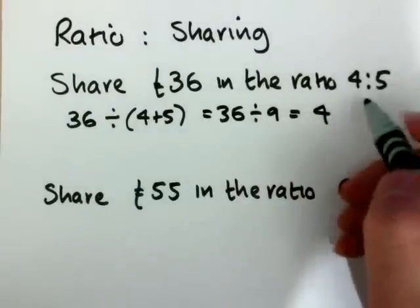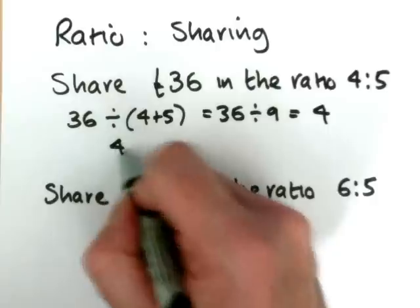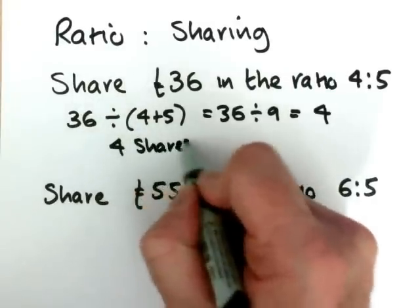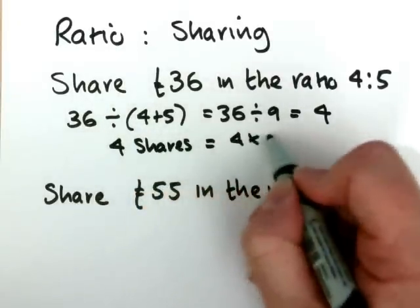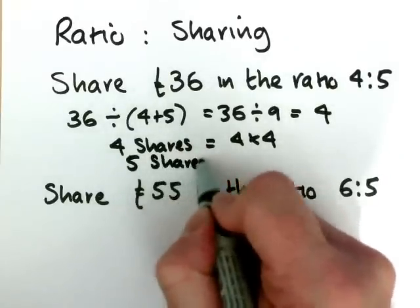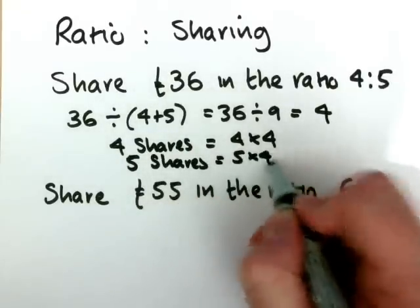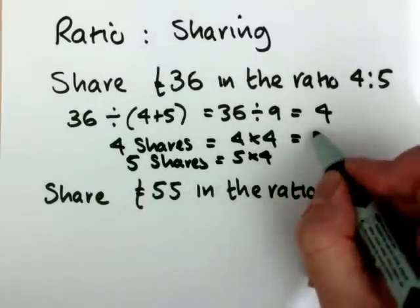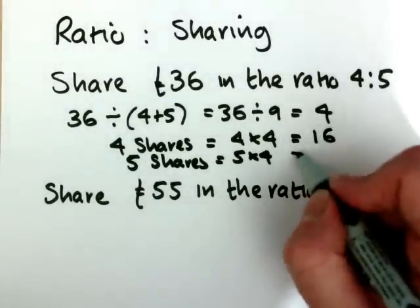Now, if we're sharing in the ratio 4 to 5, then 4 shares will equal 4 times 4, and 5 shares will equal 5 times 4. So our amounts there will be 16 and 20.